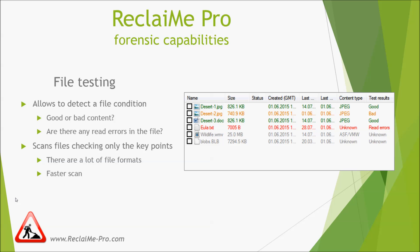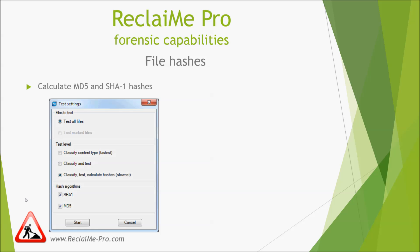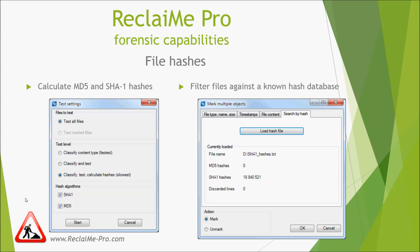The last feature we have added is calculating file hashes. File hashes can be used either just as they are, or to filter files against a known hash database — for example, based on a database of known system files to filter out uninteresting information.